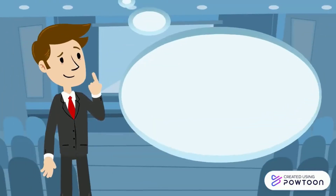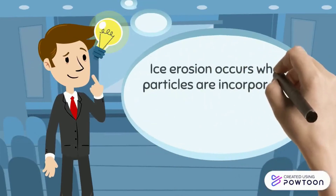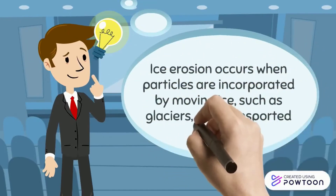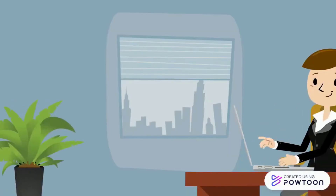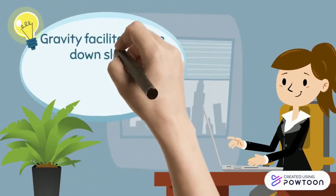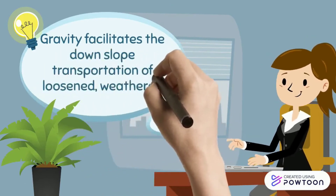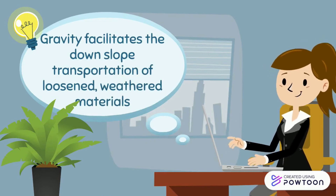The third agent is ice. Ice erosion occurs when particles are plucked up or incorporated by moving ice, such as glaciers, and are transported downhill, or when friction between the ice and bedrock erodes materials and then transports them downhill. The last agent of erosion is gravity. Gravity facilitates a downslope transportation of loosened weathered materials, enabling them to move without the aid of water, wind, or ice.